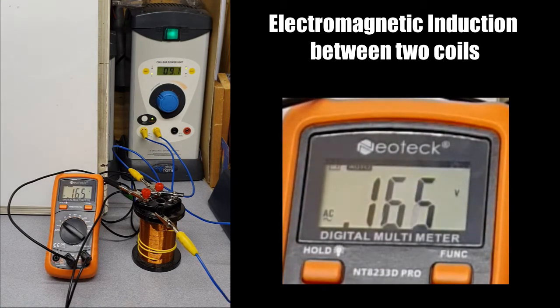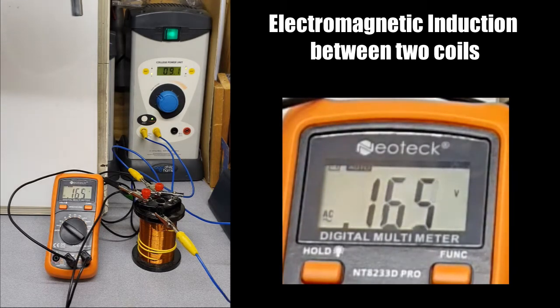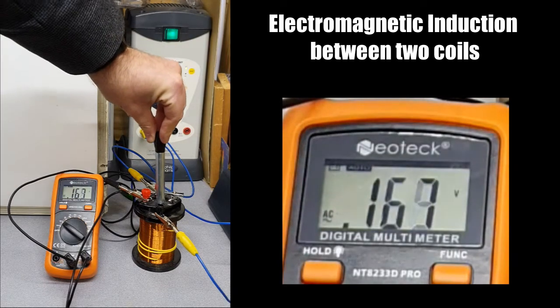Something that is also very important is that we can strengthen the magnetic field by introducing a core. So keep an eye on the voltmeter and let's take a look at what happens when we introduce a core.